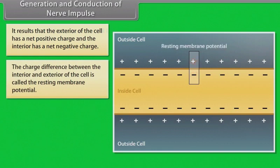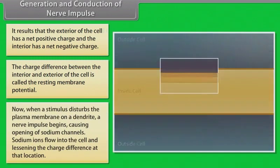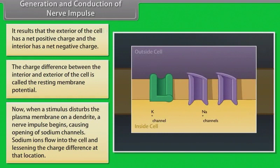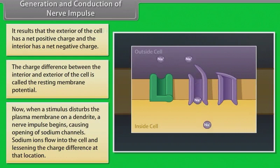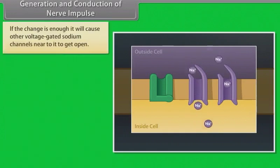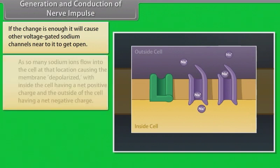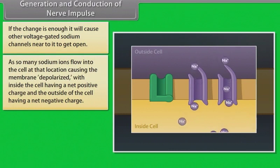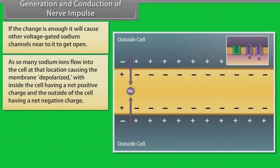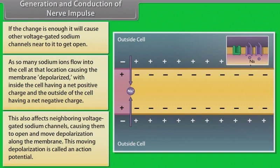The charge difference between the interior and exterior of the cell is called the resting membrane potential. When a stimulus disturbs the plasma membrane on a dendrite, a nerve impulse begins, causing sodium channels to open. Sodium ions flow into the cell and lessen the charge difference at that location. If sufficient, it causes neighboring voltage-gated sodium channels to open, with so many sodium ions flowing in that the membrane becomes depolarized — inside positive, outside negative.